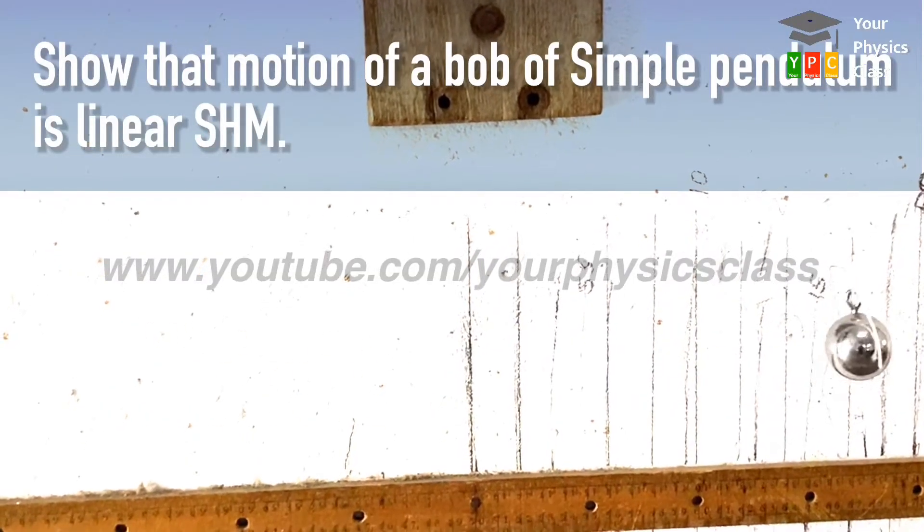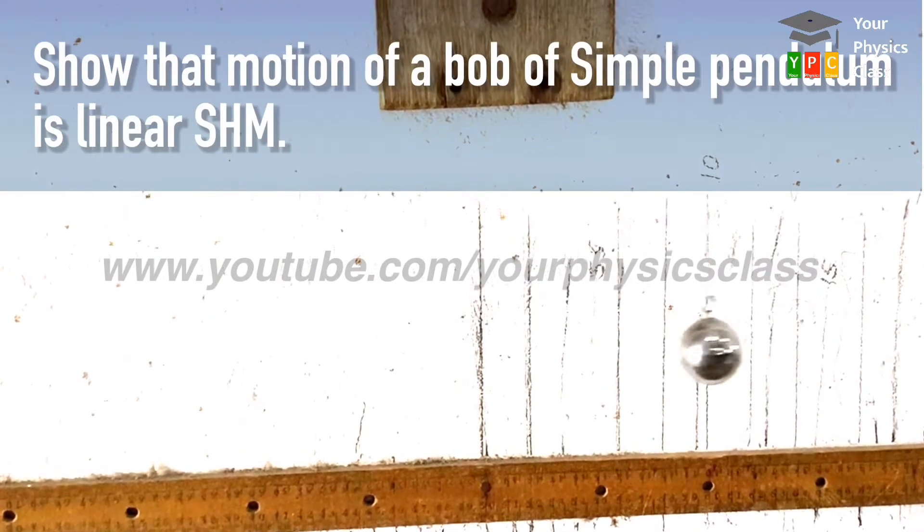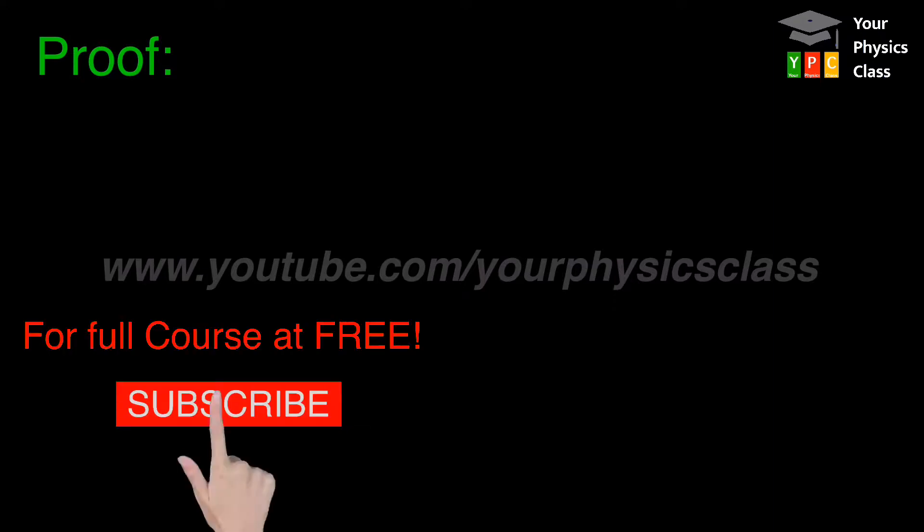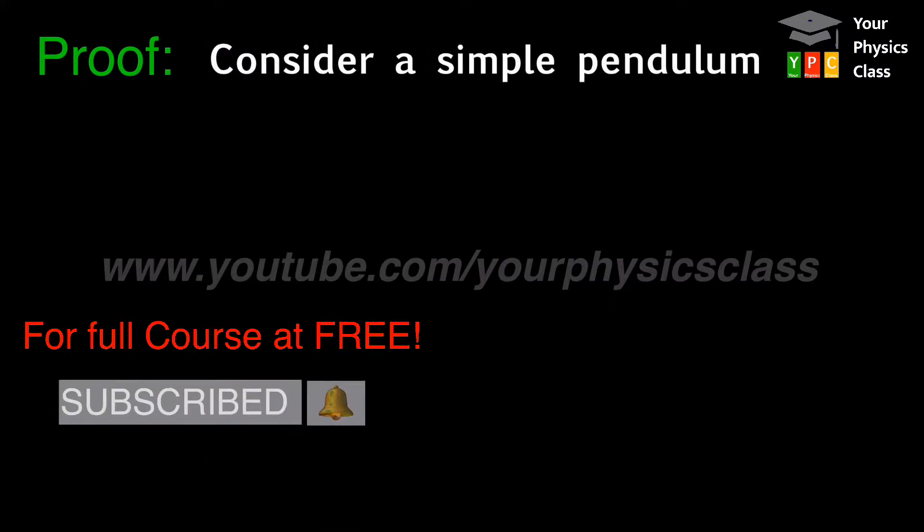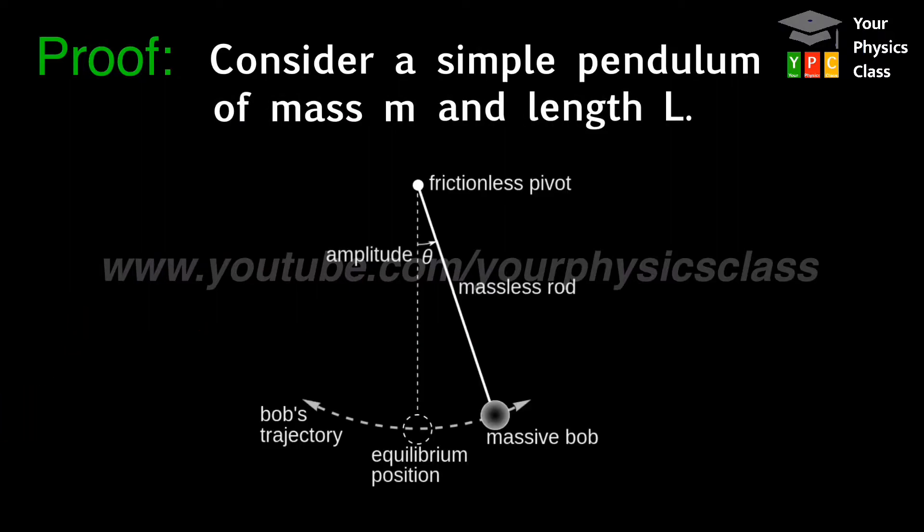Now we will prove motion of the bob is a linear simple harmonic motion. To start the proof, let's start with theory. Consider a simple pendulum of mass m and length L as shown on screen.